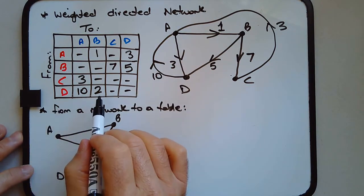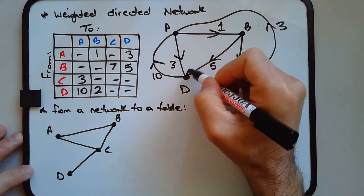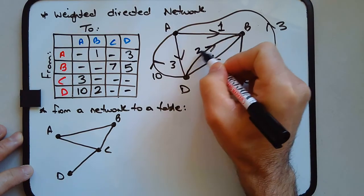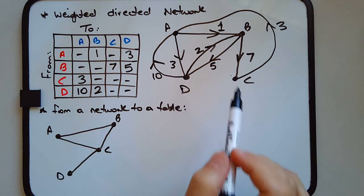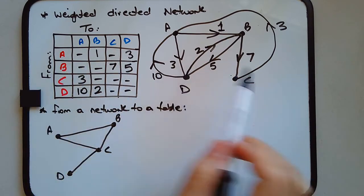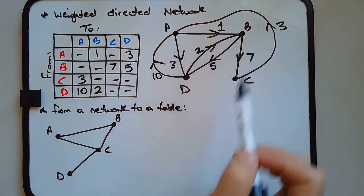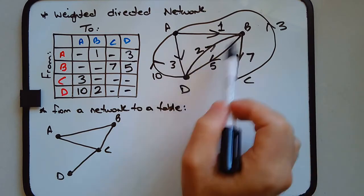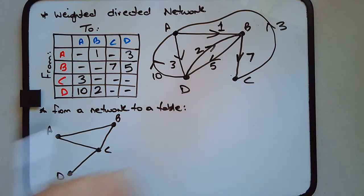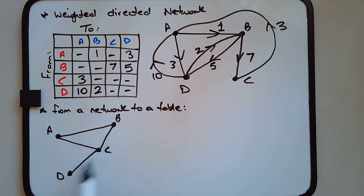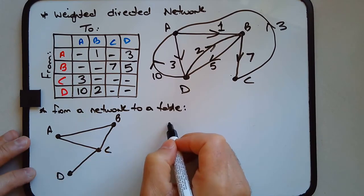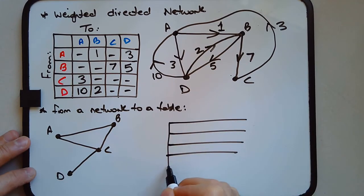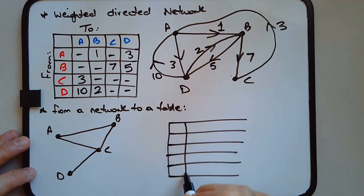D to B has weight two. That is the network diagram representing this particular table. Your vertices could be placed differently or labeled differently and it might look totally different, but the connections — the relationships between the vertices — are still identical. Now for the very last example: given a graph or diagram, we want to produce the table.